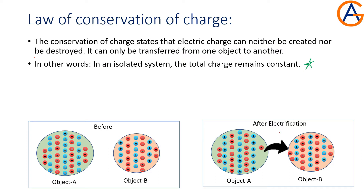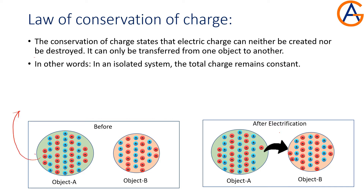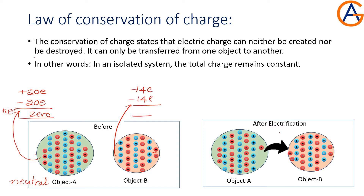Let's observe these statements in the following example. Suppose we have an isolated system consisting of object A and object B. Object A has a positive charge of plus 20E and a negative charge of minus 20E — we are writing charge in terms of the elementary charge E — so the net charge is 0. Object B is having plus 14E and minus 14E, so this is also a neutral object with a net charge of 0.